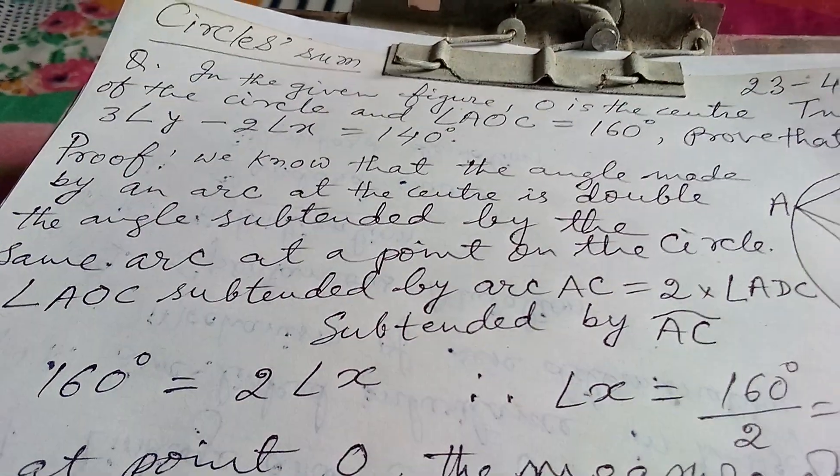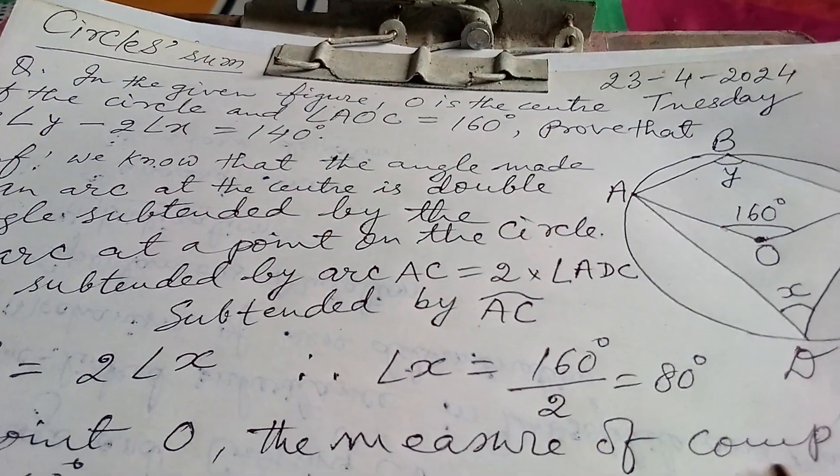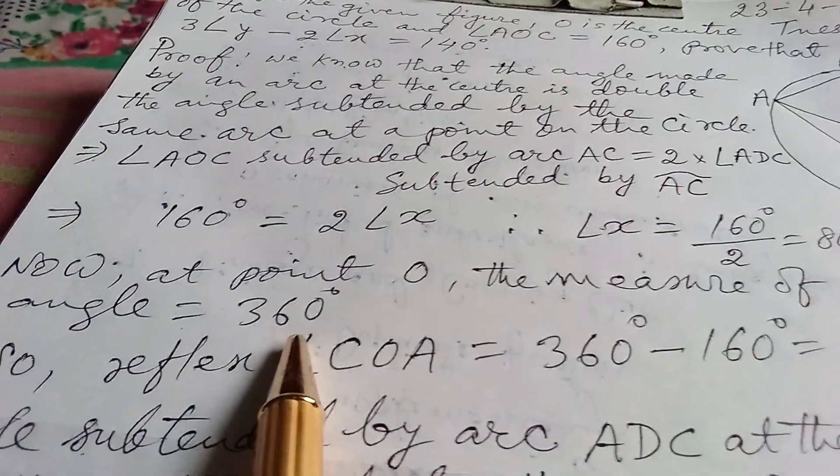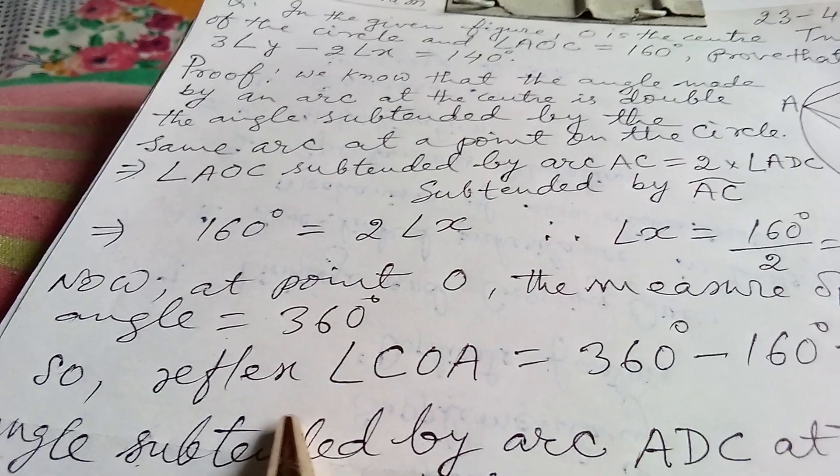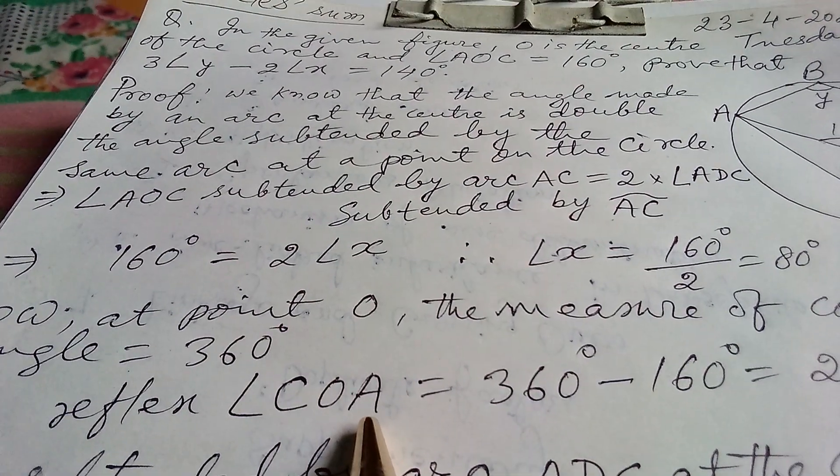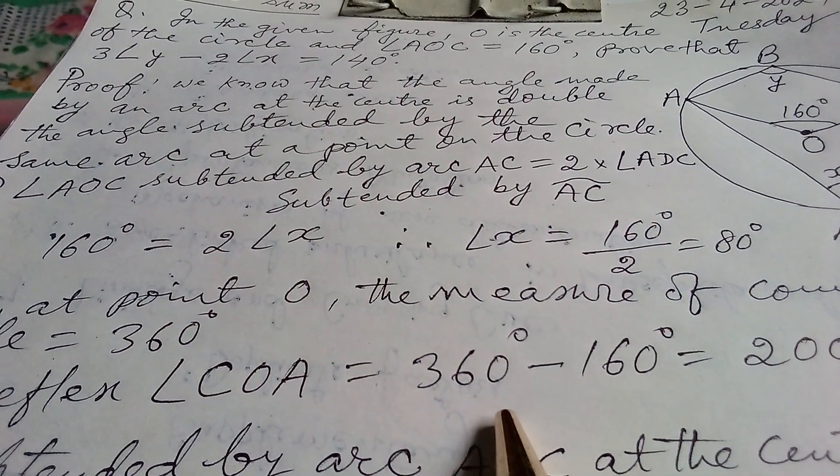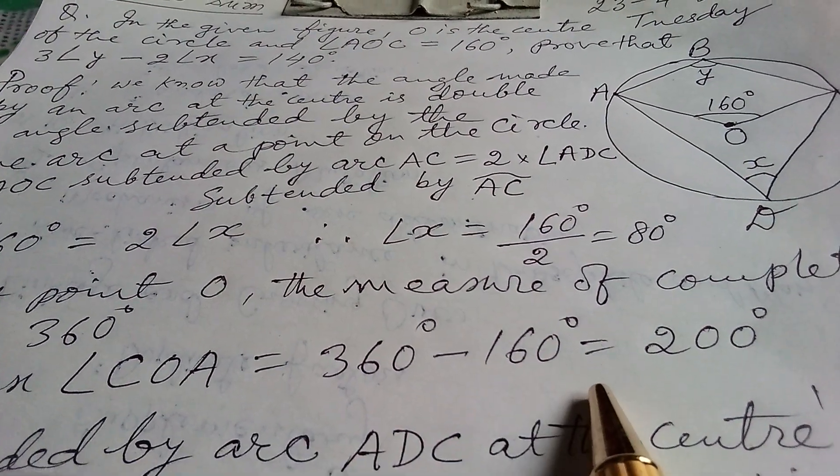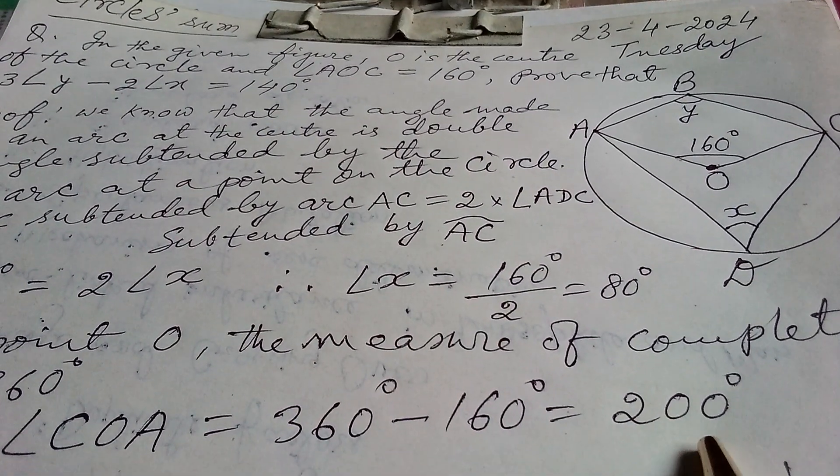Now, at point O, the measure of complete angle equals to 360 degrees. So, reflex angle COA equals to 360 degrees minus 160 degrees, that is 200 degrees.